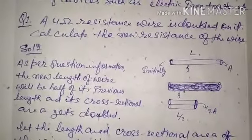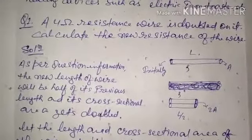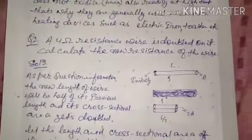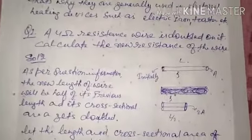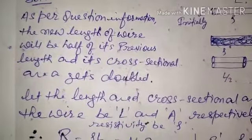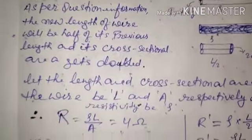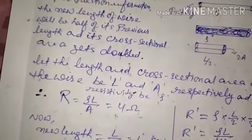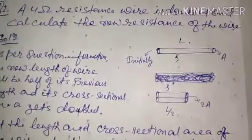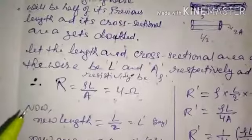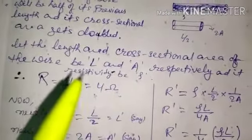Now here is a question: a 4 ohm resistance wire is doubled — that means folded. Calculate the new resistance. When folded, the length decreases to L/2 and the cross-sectional area doubles to 2A. As per the question, the new length of the wire will be half of its previous length, and the cross-sectional area gets doubled. You can see the picture showing the original and new wire.